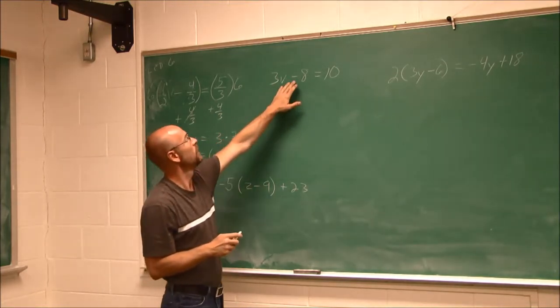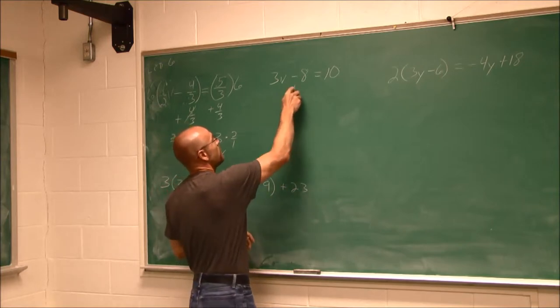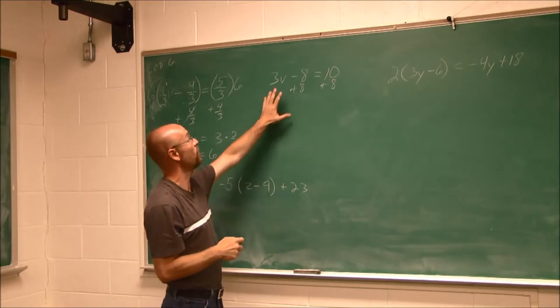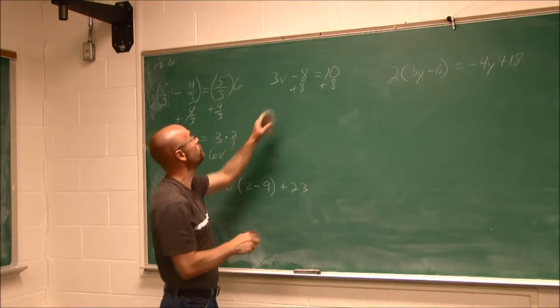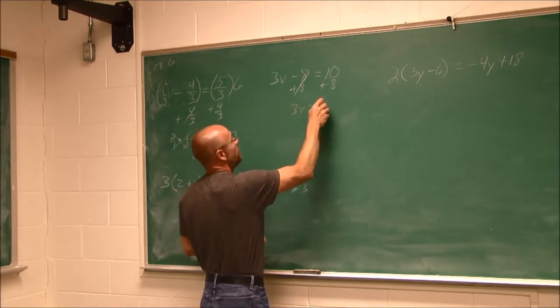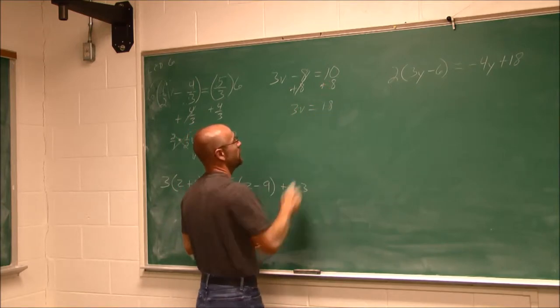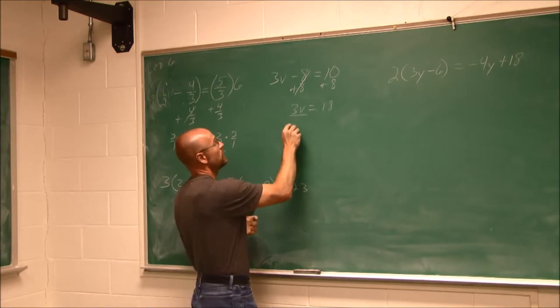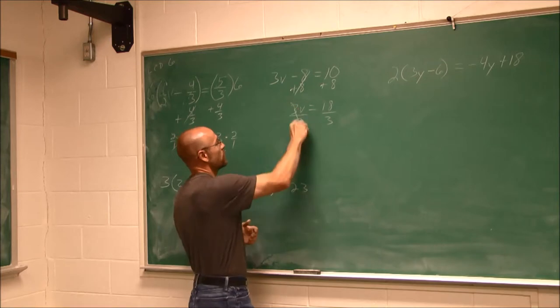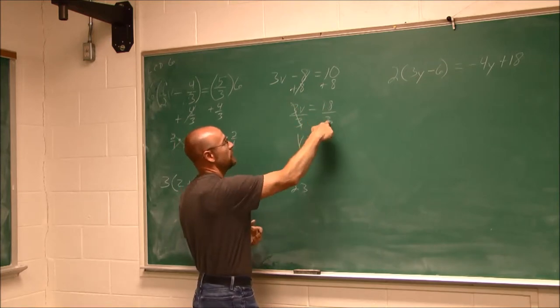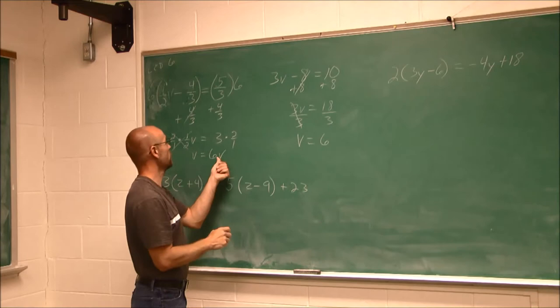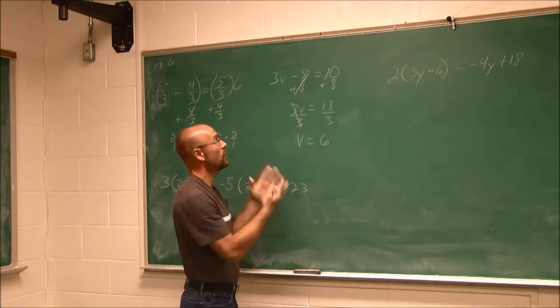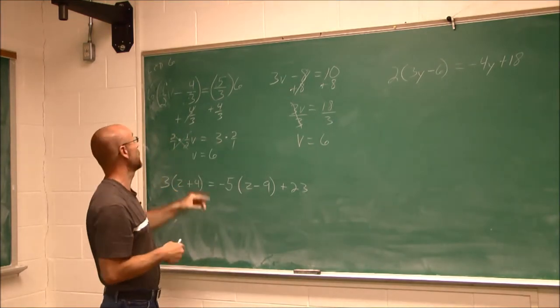Now we have 3v minus 8 equals 10. Well, let's see what happens. I want to undo this math. I'm going to add 8. And we notice this looks very different than it did before, but there's no fractions because we use that LCD. So here, this goes away, and I get 3v equals 10 plus 8 is 18. And if we notice this is multiplication, we can undo it using division. 3 over 3 is 1. 18 divided by 3 is 6. What do we notice? v equals 6, v equals 6, we got the exact same answer.